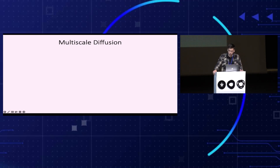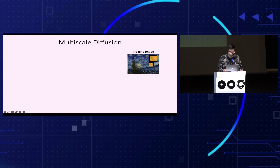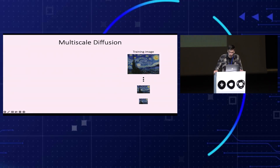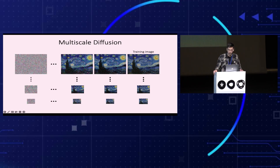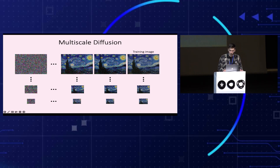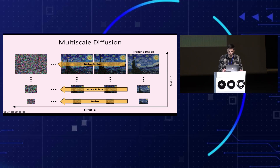To allow our model to learn from a single image, we need to capture its internal statistics. This is done by learning the distribution of patches of different sizes within the image, where larger patches capture the global structure and smaller patches capture finer details like textures. We use the formalism of diffusion models on the single image, applied at multiple scales. Specifically, we downsample the training image multiple times and gradually add noise to each until we obtain a pure noise image. Each image has a time and scale index indicating the noise level and scale. For the first scale we only add noise, and for other scales we also gradually blur the image in addition to adding noise.